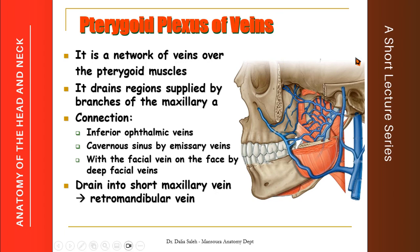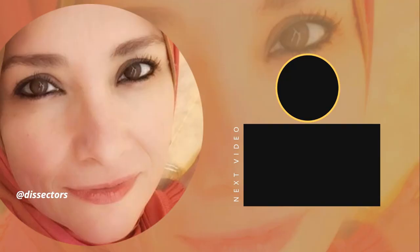The retromandibular vein then splits into an anterior division and a posterior division. The anterior division joins the facial vein to drain into the common facial vein, while the posterior division joins the posterior auricular vein to form the external jugular vein.